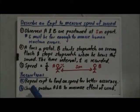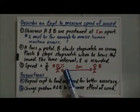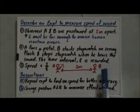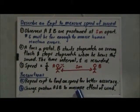And the second one is that we have to change the position of observer A and observer B so as to minimize the effect of the wind.